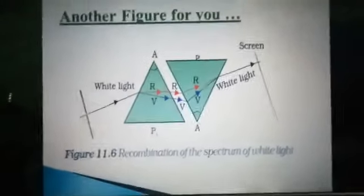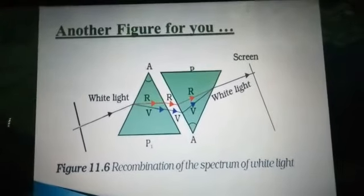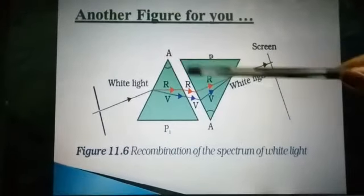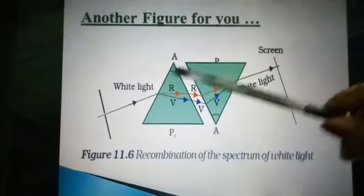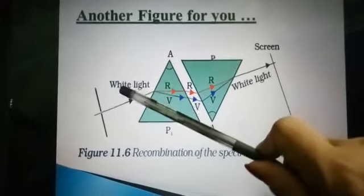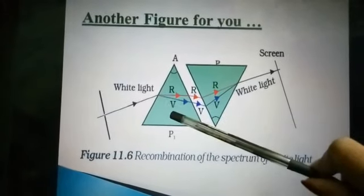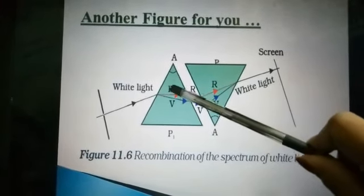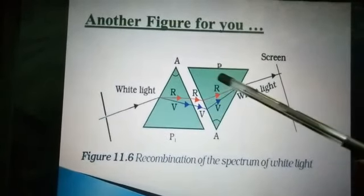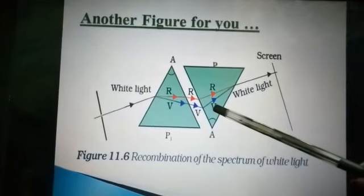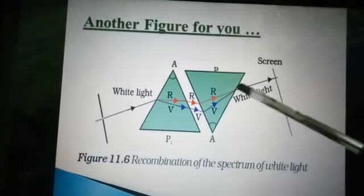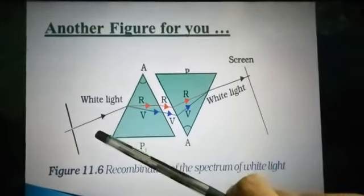Next we have another figure. You are observing two prisms — one is erect and the other is inverted. White light enters the first prism and breaks into all seven colors, with red on top and violet at the bottom. The same colors enter the inverted prism — red, white, and violet — and at the end you observe white light again.